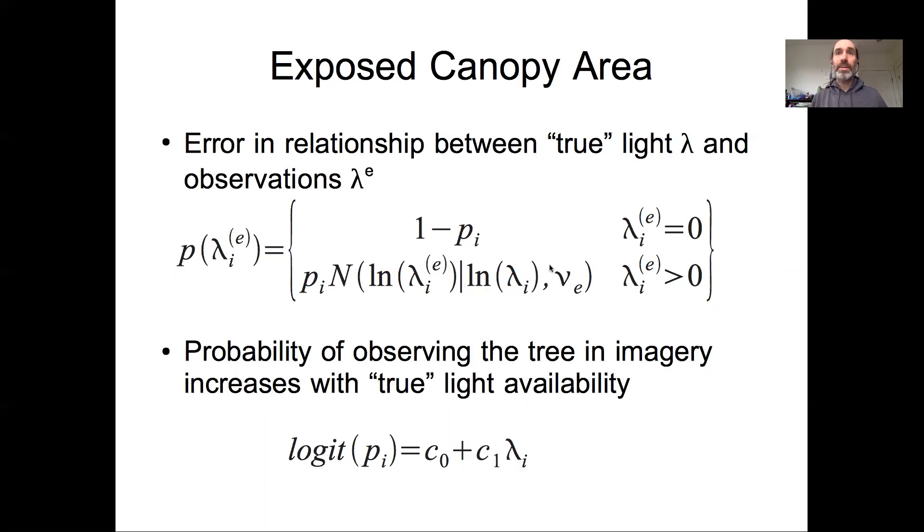So we're acknowledging that there's missingness for individuals we don't see, we acknowledge that there's error in the relationship, but we're not actually estimating a slope or an intercept in this term because we're assuming that these things are, at least on a log-log scale, linearly related to each other. They're on the same scale. We do need to estimate the c0 and c1 that describes when this trade-off between observed and not observed is, and the slope of that.